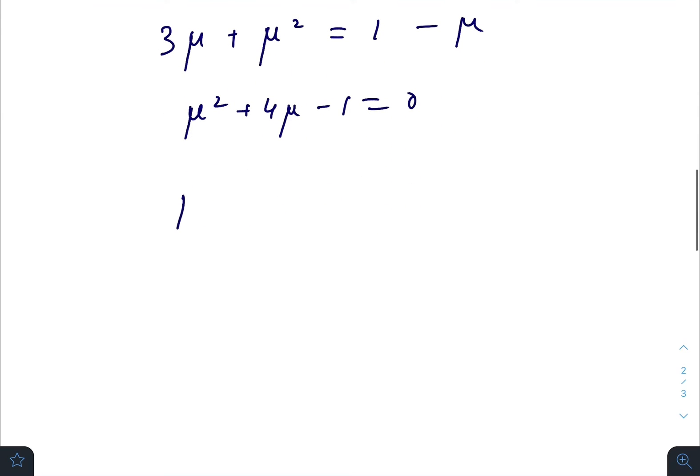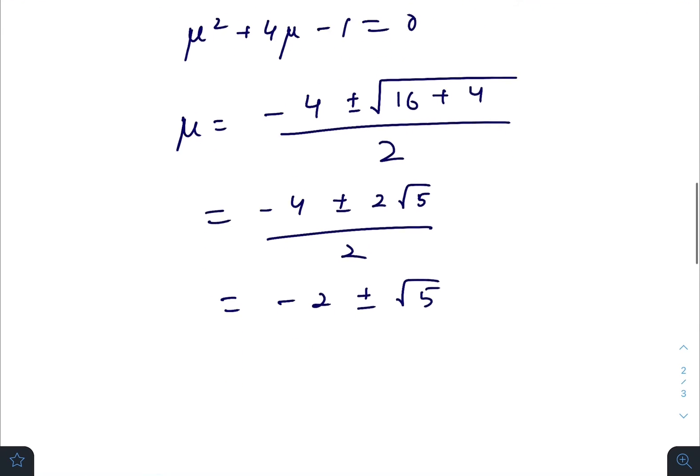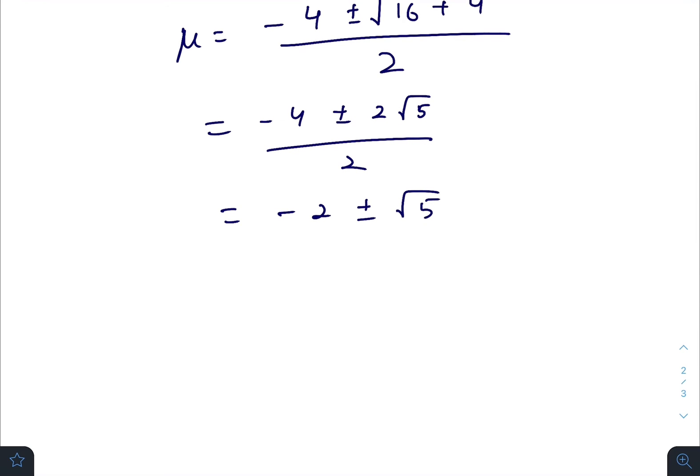We have μ equals (-b ± √(b² - 4ac))/2a, so (-4 ± √20)/2, which gives us -2 ± √5. The negative portion is not allowed, so μ minimum will be √5 - 2.